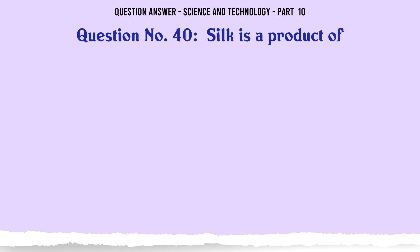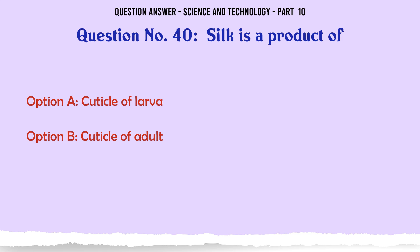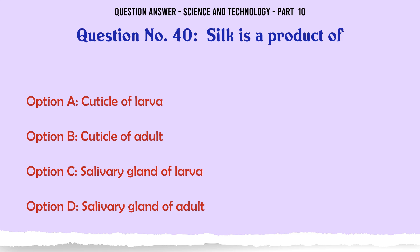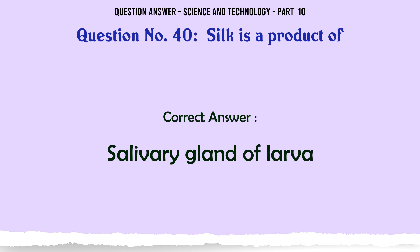Silk is a product of. A. Cuticle of larva. B. Cuticle of adult. C. Salivary gland of larva. D. Salivary gland of adult. The correct answer is Salivary gland of larva.